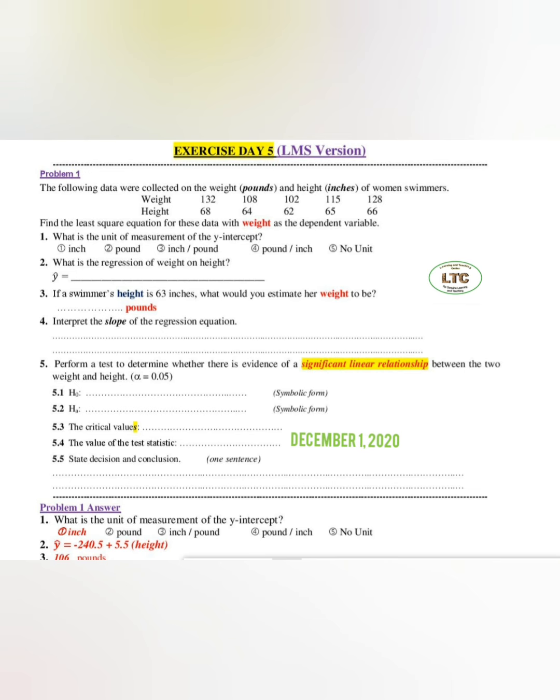Consider problem 1. The following data were collected on the weight in pounds and height of women swimmers. We have 5 pairs from 5 swimmers - this is a sample. Find the least squares equation for this data with weight as the dependent variable.